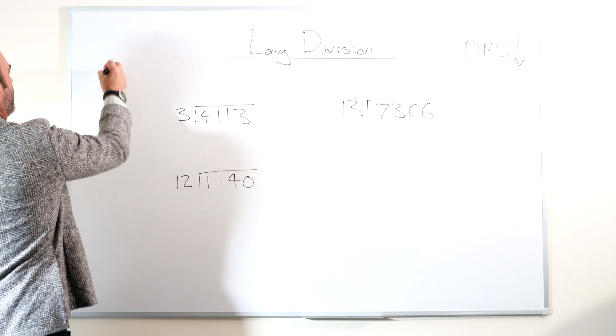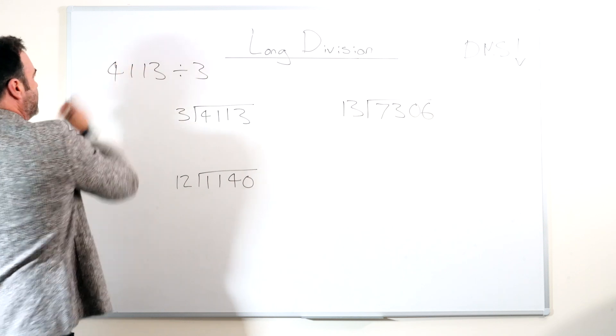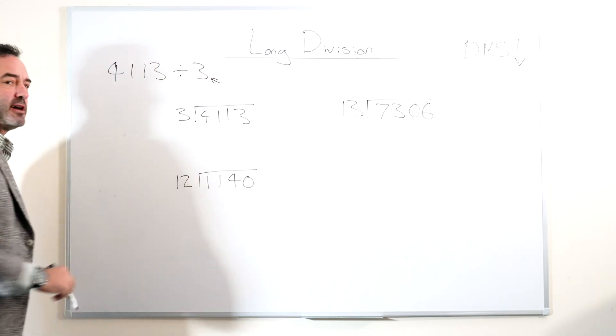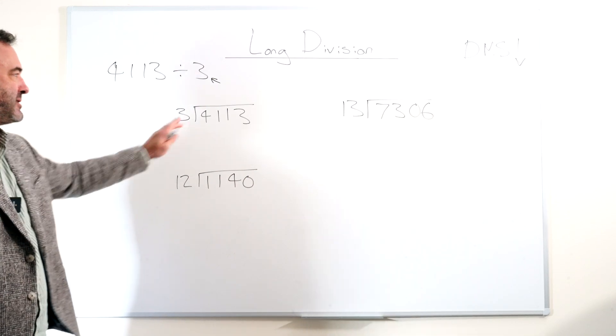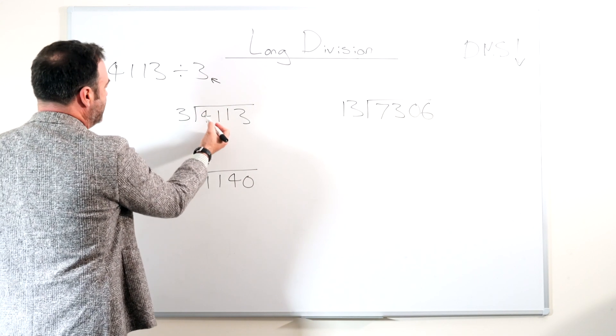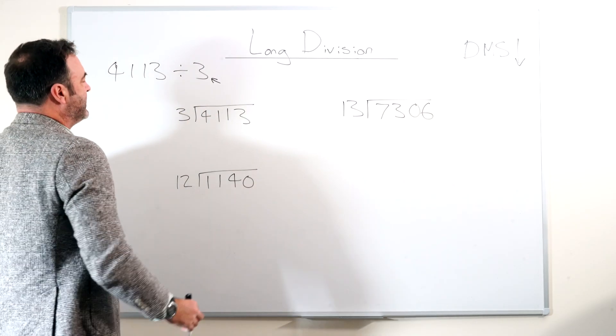So we've got 4113 divided by 3. This is how it's laid out. So I would say to kids, the number on the right hand side goes out in the cold, so it goes outside the bus stop. So what we say is how many times could we fit 3 inside 4 without going over? What's the maximum number of times we could do that?